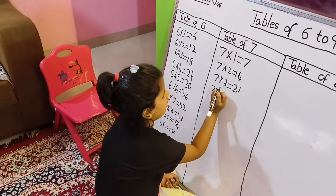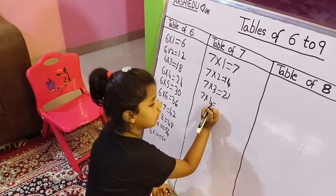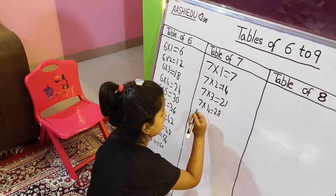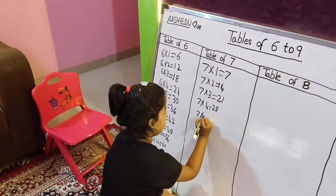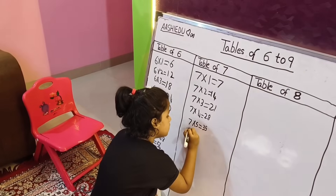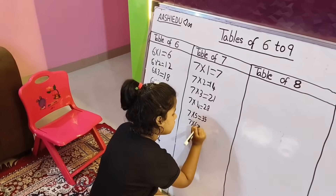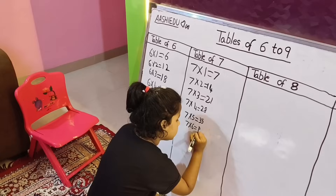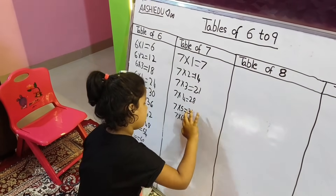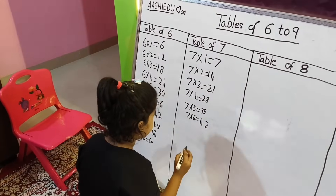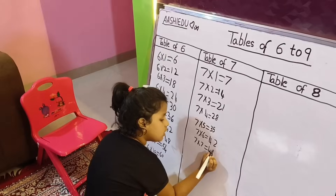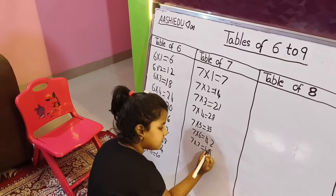Seven. Seven multiply four. Four. Four. Twenty. Eight. Seven. Five. Five, five. Seven — forty-five, forty-five. Seven — forty-two. Forty-two. Seven, seven, seven, seven. Forty-nine — you do nine and see like it's looking nine.